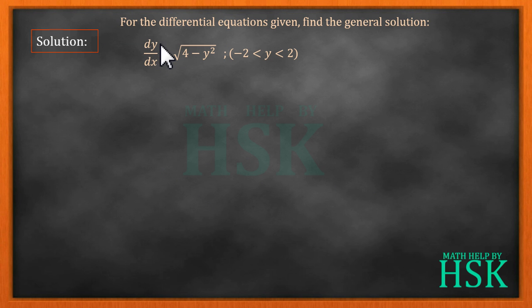So that is why this interval is given to us. Now to solve this equation, we see that it is in the variable separable form. So what I am going to do is separate the variables and write the equation as one upon square root of four minus y squared dy equals dx.